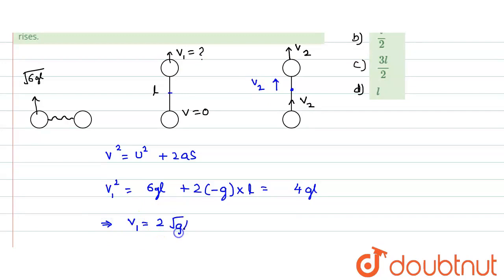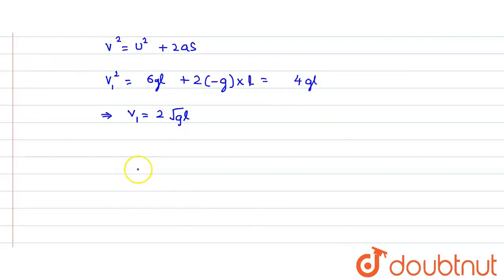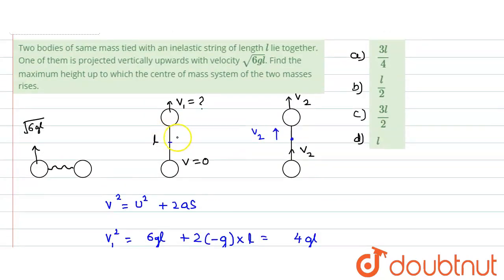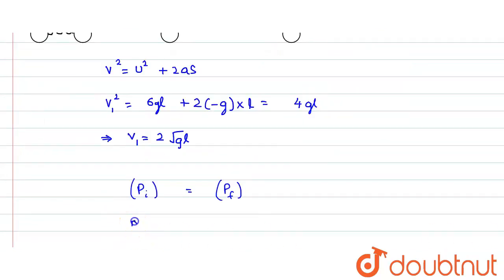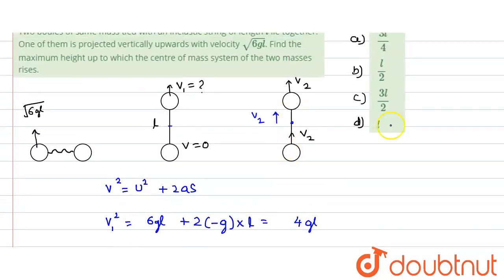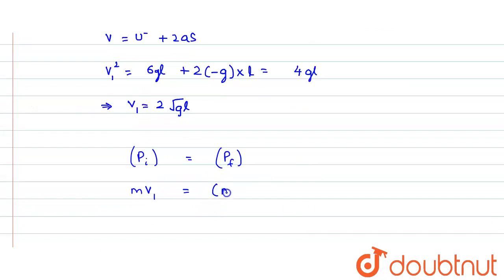Now just when the string becomes taut, momentum is conserved — just before and just after the string becomes taut. So the initial momentum in the vertical direction: the lower block was at rest and the upper block is moving, so we have m × v1 = (m + m) × v2. From here we get v2 = v1 / 2.